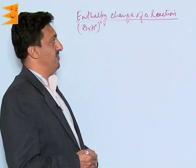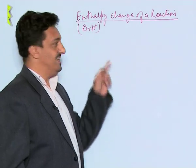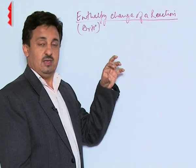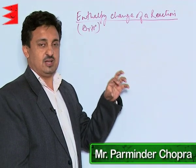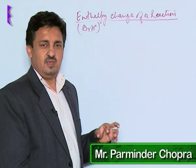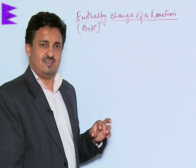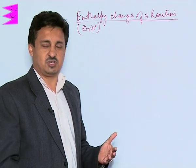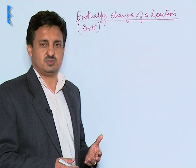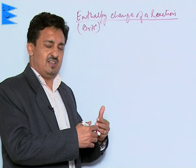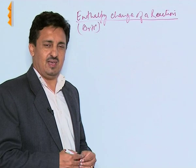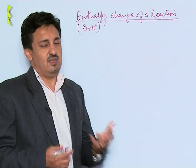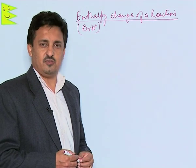Let us see the enthalpy change of a reaction, we call it delta Rh0. The R written in the subscript indicates that it is the enthalpy change during a reaction. The energy exchange or energy change accompanying any reaction is called enthalpy change of a reaction — whatever the amount of heat energy is being lost or gained during that process, we call it enthalpy change of a reaction.